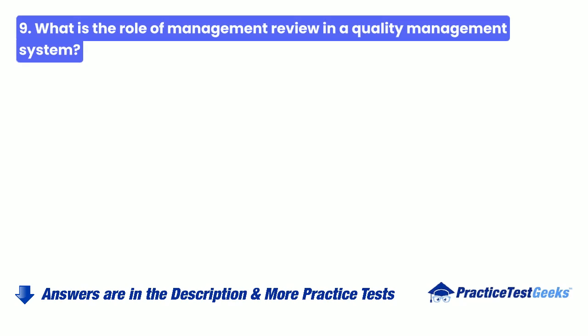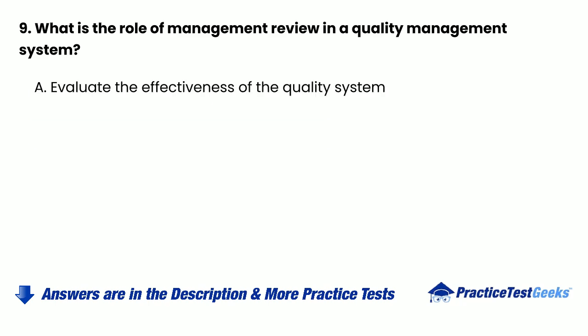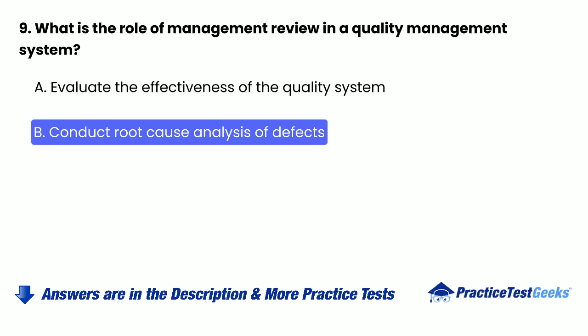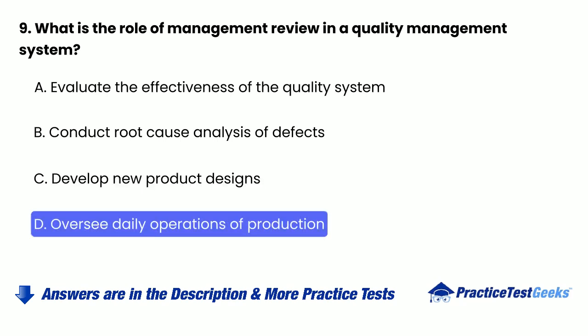9. What is the role of management review in a quality management system? a. Evaluate the effectiveness of the quality system. b. Conduct root cause analysis of defects. c. Develop new product designs. d. Oversee daily operations of production.